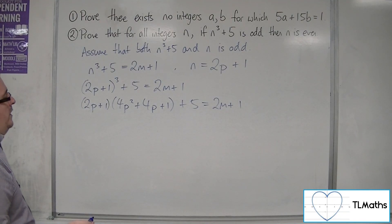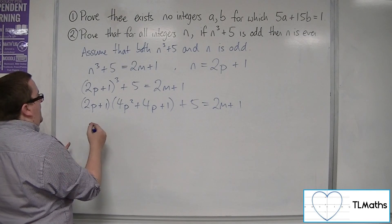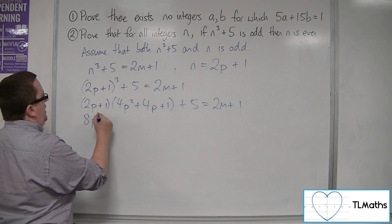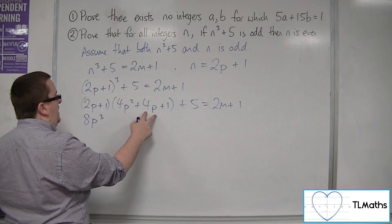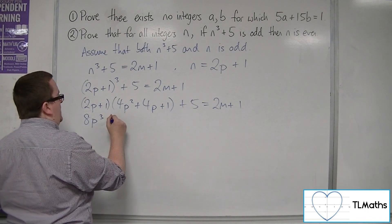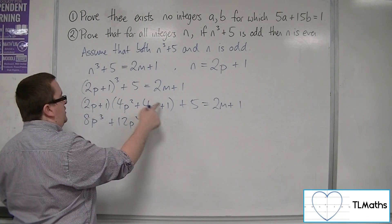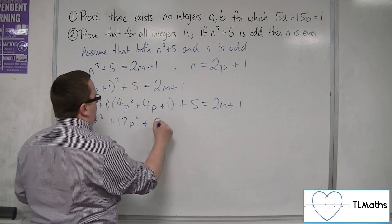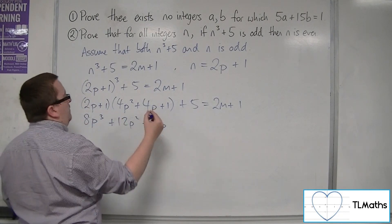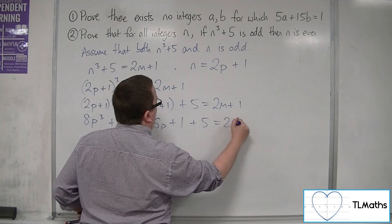Okay, so then I can expand that out. So I'm going to get 8p cubed. I'm going to get 2p times 4p, so 8p squared plus another 4p squared, so 12p squared. I've got the 2p times the 1 and the 1 times the 4p, so another 6p, and then I've got 1 times 1 is 1 plus the 5 is 2m plus 1.